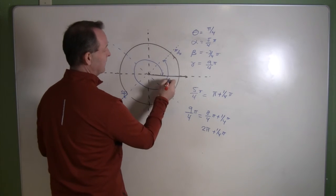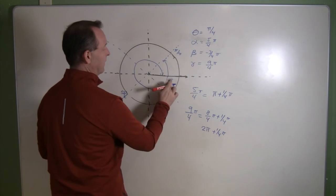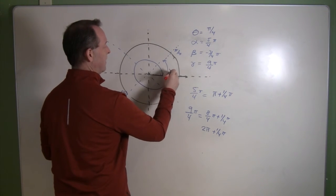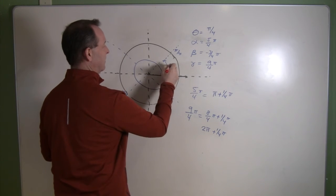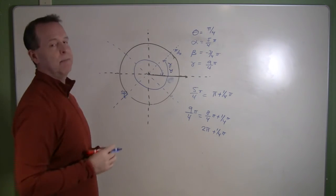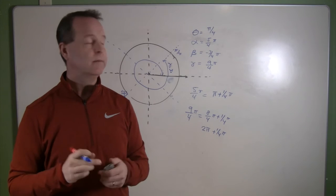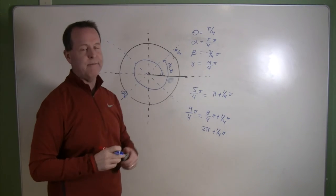And then that angle right there represents, whoops, sorry, not my alpha, but that represents my, here, let's do a better gamma. There you go. That represents my gamma's measurement angle in that particular case, nine fourths pi.